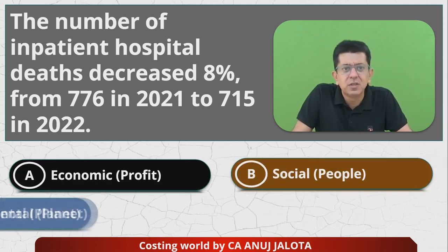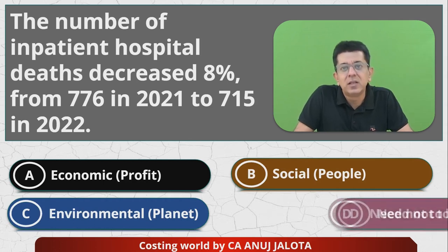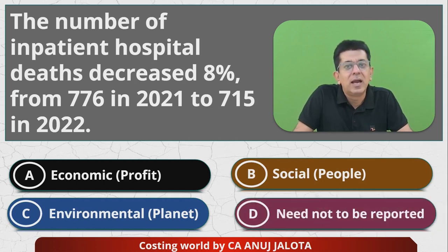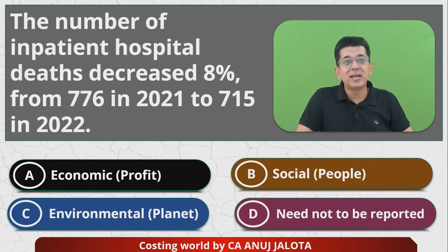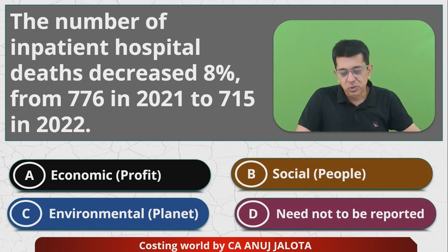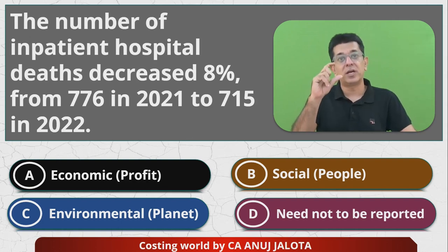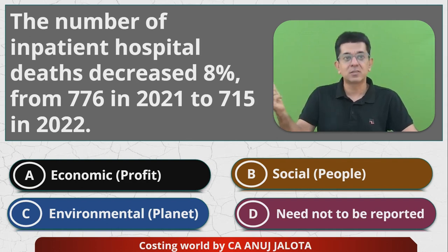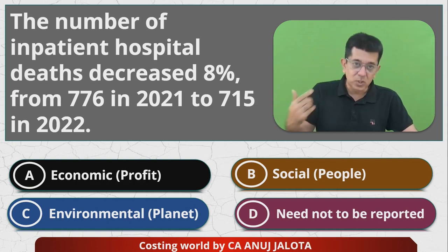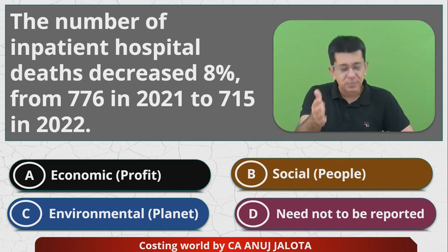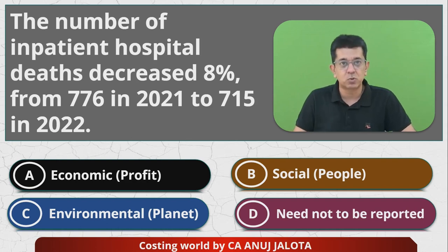The four options are: economic, social, environmental, and need not be reported. Actually, this is a somewhat straightforward question. What we have to be doing here — this question is all about triple bottom line. They should have mentioned that this information will get reported under which of the three areas. You must be knowing this, but I'm giving you time to answer.